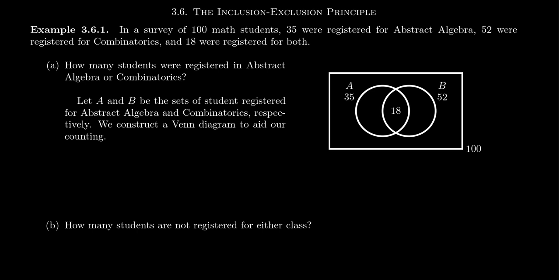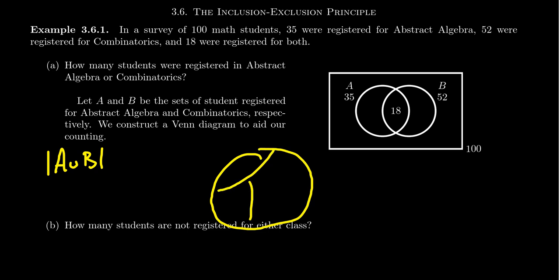If we want to know how many students are registered for abstract algebra or combinatorics, what we're trying to do is find the cardinality of the union of the two sets, A and B together. We've used the addition principle in previous lessons to solve enumeration problems that involve partitions — if you can count the sizes of each cell in the partition, you can add those together to get the cardinality of the total set. But the addition principle with partitions requires that the partitions don't overlap; the cells are mutually exclusive with no intersection.